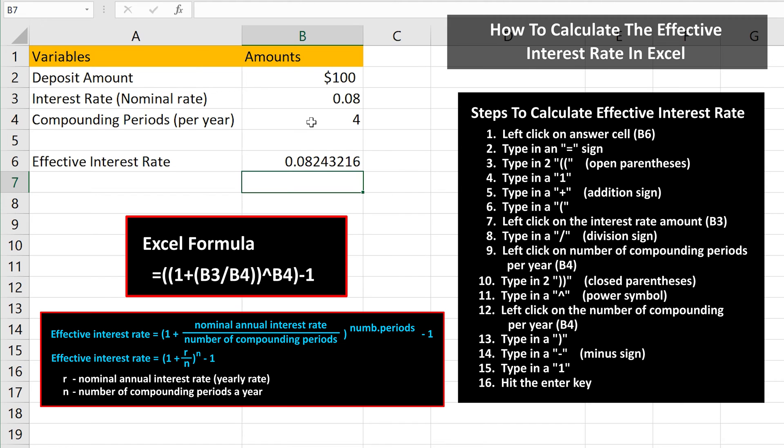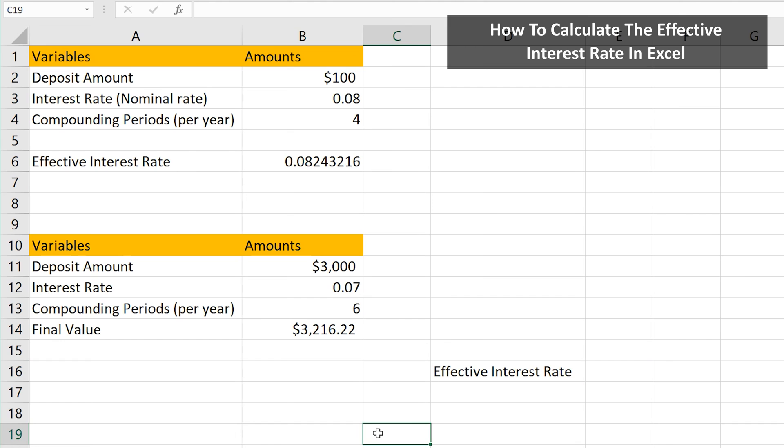One other note for if or when you know the final value of the investment. Here, I have the data entered for an investment of $3,000 at a nominal rate of 7%, compounding bimonthly, six times per year. And the final value of the investment is $3,216.22.